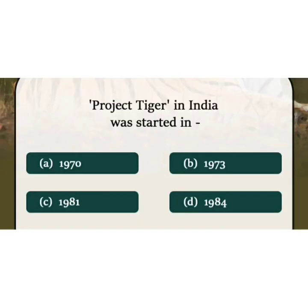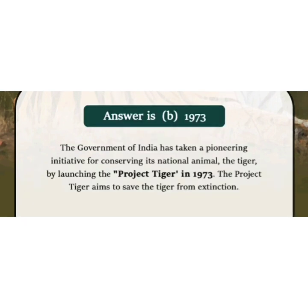The next question: Project Tiger in India was started in which year? You should have studied it before. The right answer is option B — 1973. The details are given below; please make sure to read them.